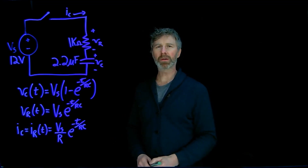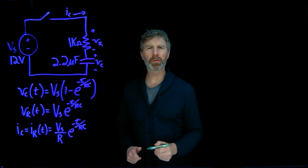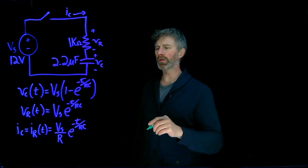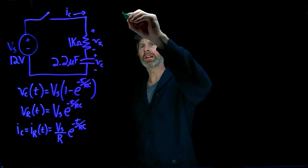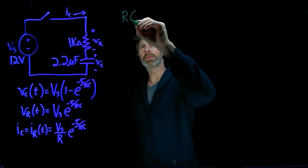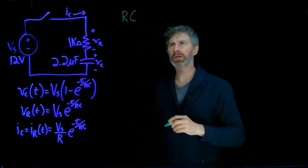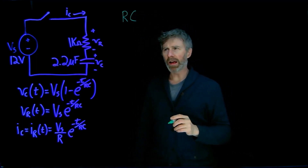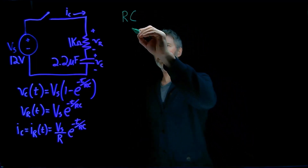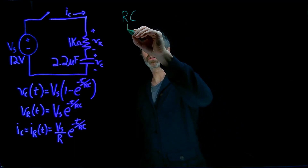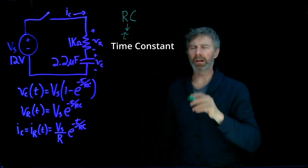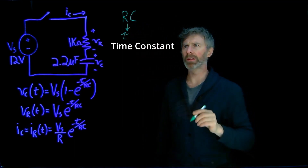Before we jump into that, I want to point out something that keeps occurring over and over again in these equations, and that's this value: resistance times capacitance. This resistance times capacitance is sometimes called tau, or the time constant for the circuit, and I'll show you why that is.